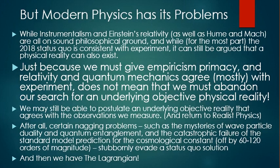But modern physics has its problems. While instrumentalism and Einstein's relativity, as well as Hume and Mach, are all on solid philosophical ground, and while for the most part the 2018 status quo is consistent with experiment, it can still be argued that a physical reality can also exist. Just because we must give empiricism primacy, and relativity and quantum mechanics agree mostly with experiment, this does not mean that we must abandon our search for an underlying objective physical reality. Certain nagging problems — such as the mysteries of wave-particle duality and quantum entanglement, and the catastrophic failure of the standard model prediction for the cosmological constant, which is off by between 60 and 120 orders of magnitude — stubbornly evade a status quo solution.